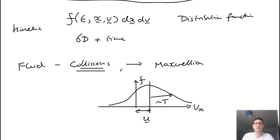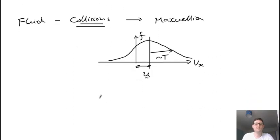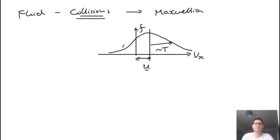If we have enough collisions, the distribution function goes to Maxwellian. If we don't have collisions, then this distribution function could have all kinds of crazy shapes, and we can't in general simplify that. But if it's Maxwellian, then it's basically just a Gaussian, and this can be simplified to solve for moments.